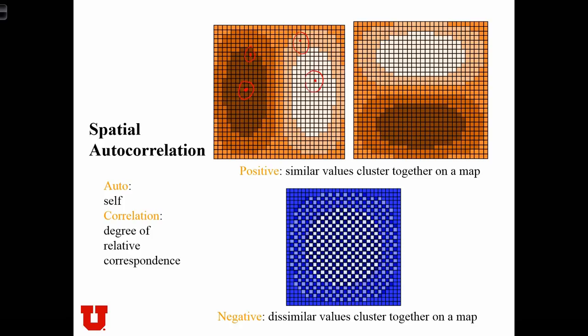Instead of there being two variables, we're going to construct the second variable as just the neighborhood averages around locations in the first variable.